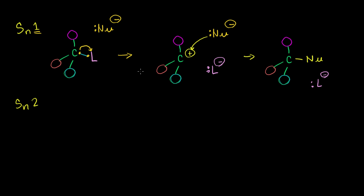In order for the leaving group to leave spontaneously in the first step, the resulting carbocation must be stable. A stable carbocation needs to be bonded to things willing to lend it electrons. So this carbocation has to be tertiary — ideally all three substituents are carbons or carbon chains. Secondary will also work if the solvent is favorable. Primary or methyl carbocations are too unstable, so you're unlikely to have an SN1 reaction in those cases.